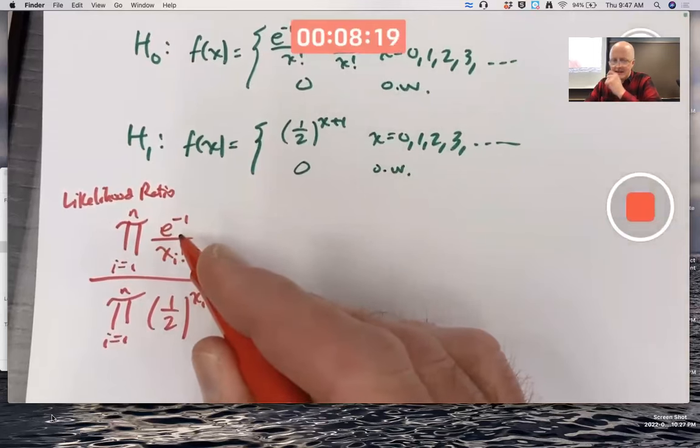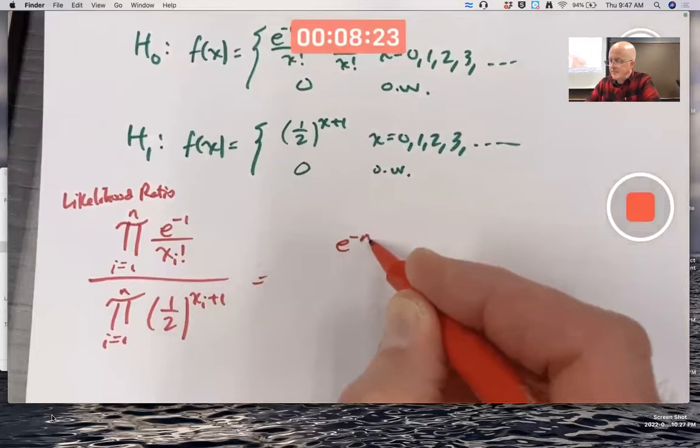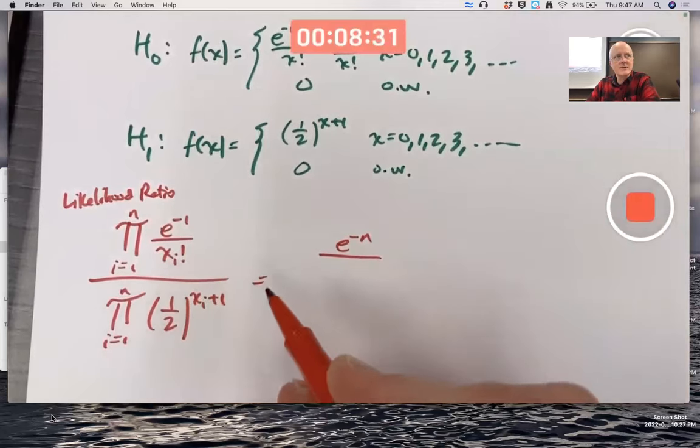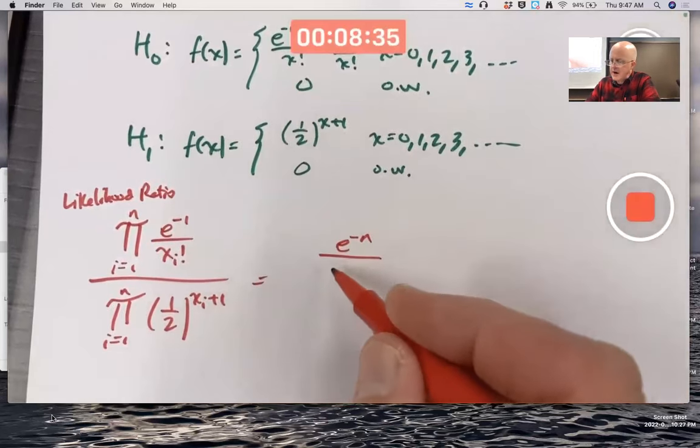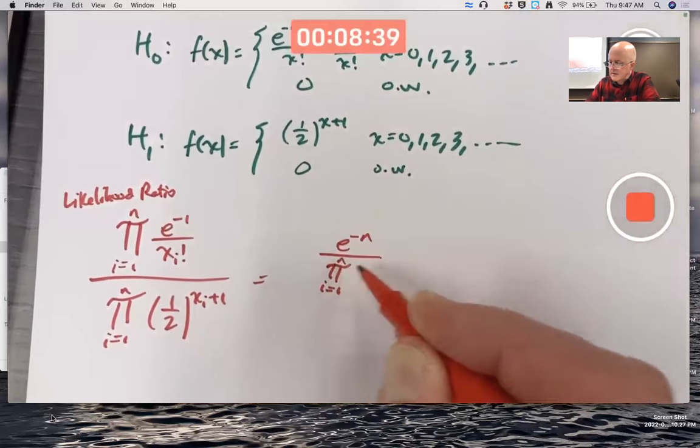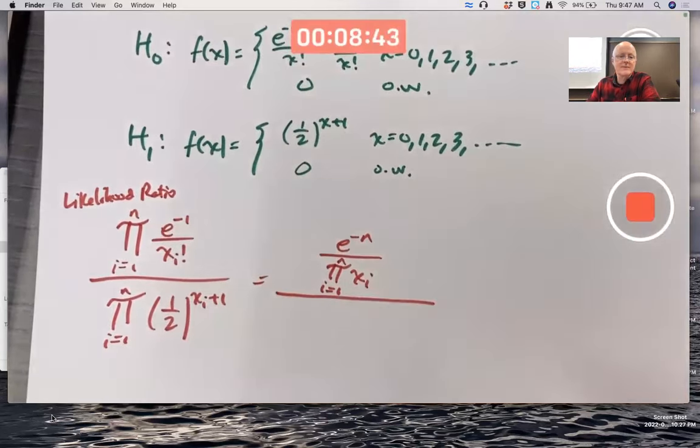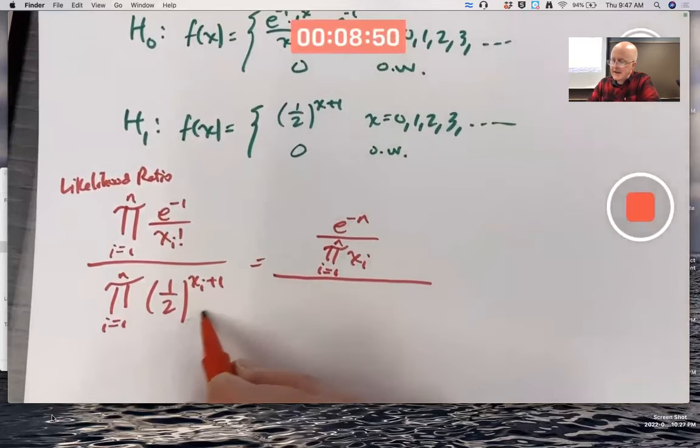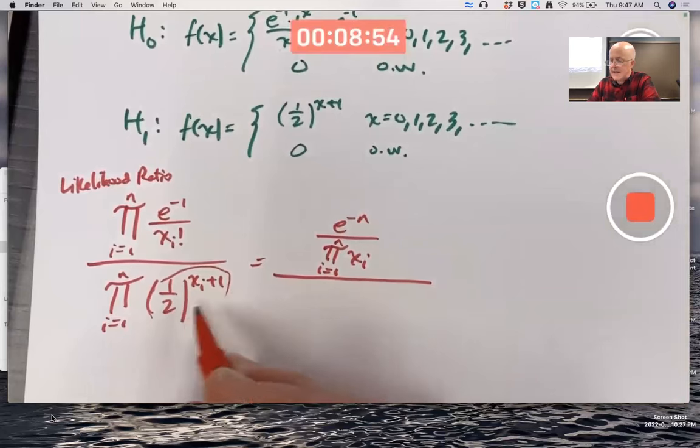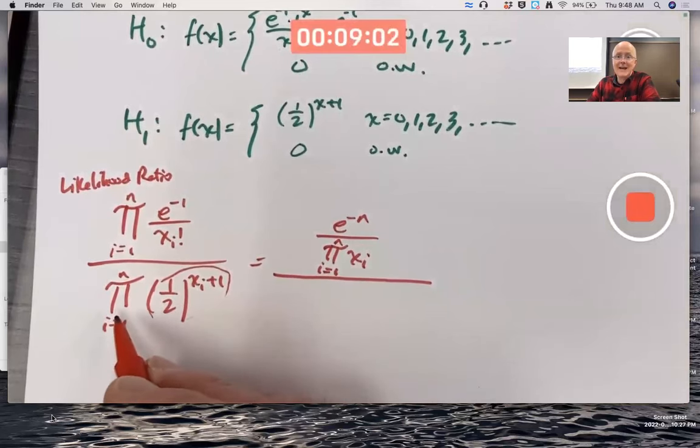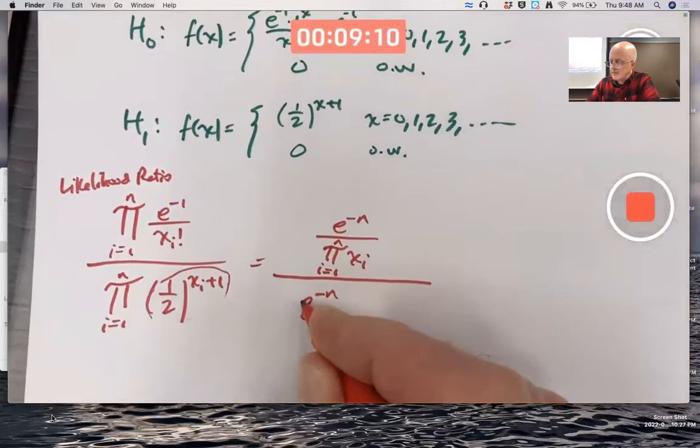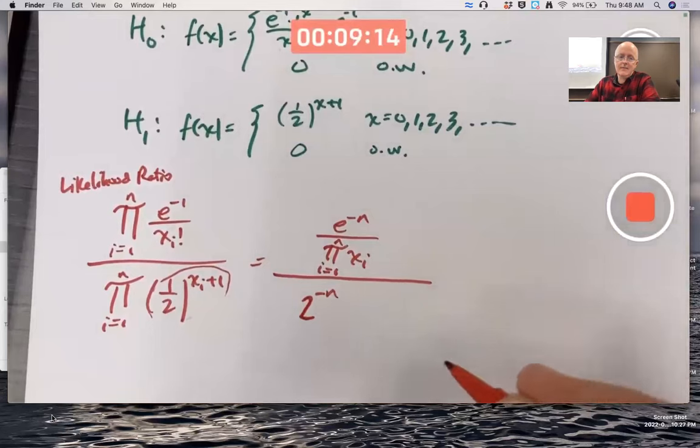Of course, you usually want to simplify this. E to the negative 1 is getting multiplied by itself n times. So that's the same as e to the negative n. In the bottom, we really have like an x1 factorial times an x2 factorial times an x3 factorial. That doesn't convert to a sum. It would still be a product. I could put the product in the bottom of the fraction, though. Is this a good idea or not? I got it. It's not clear. Of course, this is the same as one half to the first power times one half to the x i. You could bring the one half to the first power out in front as one half to the nth power, because you'd be multiplying it by itself n times. And that's the same as two to the negative n.